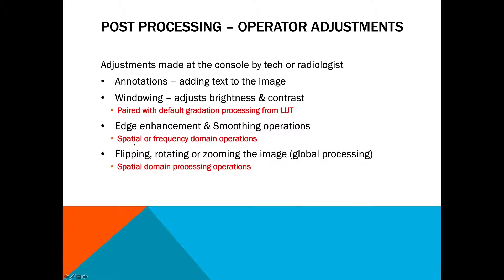Kernel changes are going to happen here, along with high pass and low pass frequency filtering. If you're flipping, rotating, or zooming in on the image, those are global processing operations happening in the spatial domain. Remember, if you're flipping, rotating, or zooming, that involves all of the pixels, so it's specific to pixel location.